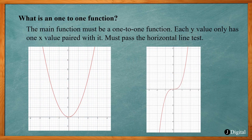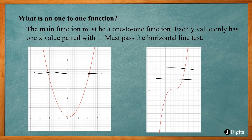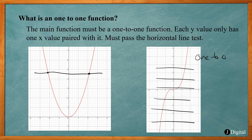A requirement for the main function is that it has to be a one-to-one function, meaning each y value has only one x value paired with it. You can test this by doing the horizontal line test — if you can draw a horizontal line and hit two spots on the graph, it is not a one-to-one function. If I try it on this one, I'm going to hit one spot at a time, so this is a one-to-one function. Remember, the main function has to pass the horizontal line test.